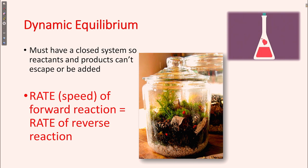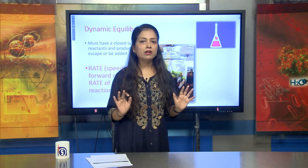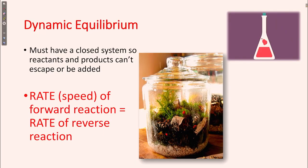Dynamic equilibrium can only occur in a closed system — it will never happen in an open system. In a closed system, reactants and products cannot escape or be added. The rate or speed of the forward reaction is always equal to the rate of the reverse reaction. As shown on screen, a completely closed container represents a closed system, and the equilibrium stabilized within it is known as dynamic equilibrium.